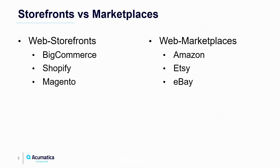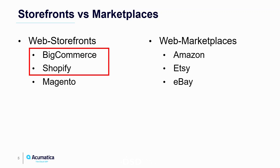When talking about e-commerce and the omni-channel platform, we're talking about different storefronts versus web marketplaces. Storefronts are e-commerce platforms like BigCommerce, Shopify, and Magento. Marketplaces are places where you put your products and use their marketing to promote them — things like Amazon, Etsy, and eBay. With our Retail Commerce Edition of Acumatica, we have native connectors to two major storefronts: BigCommerce and Shopify.